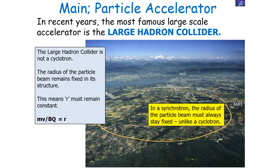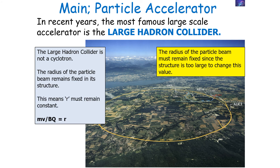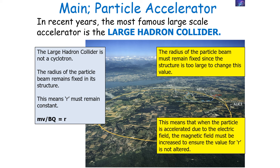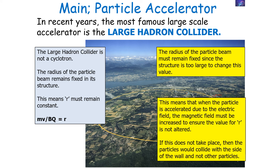In a synchrotron, the radius of the particle beam must always stay fixed, unlike a cyclotron. The radius must remain fixed because the structure is too large to change it, and if the beam deviated, the particles would hit the side of the collider. So when the particle is accelerated by the electrical field, the magnetic field must also be increased to ensure the value of r is not altered — the increased B value in r = mv / Bq cancels out the increased v value.